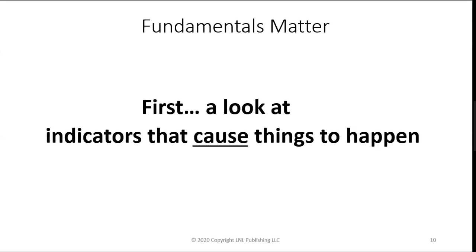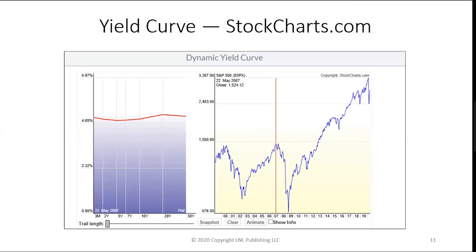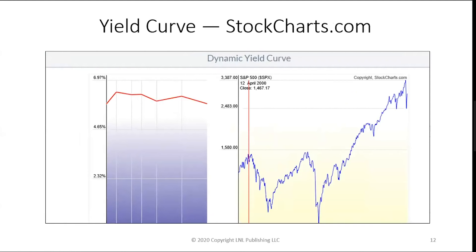Most technical indicators you see on StockCharts.com are technical in their derivation — they're all just a reflection or manipulation of price data. But fundamentals are totally different. StockCharts.com has some really good fundamental data, including the yield curve. At the peak in 2007, look — the yield curve was flat and coming down, indicating tough sledding ahead in the marketplace. We see the same thing at the start of the 2002 bear market. The yield curve tells us what investors think will happen in the future, and whether future interest rates are higher or lower than now is a strong message to the market.